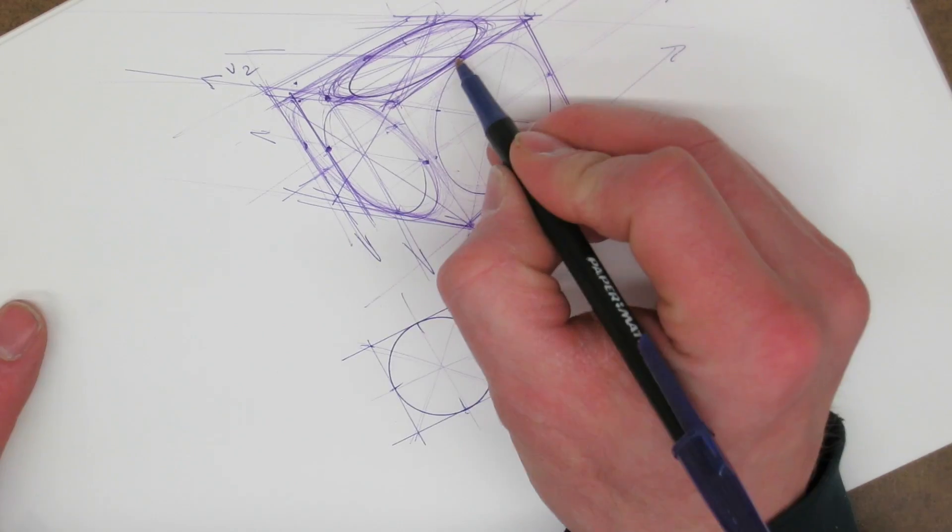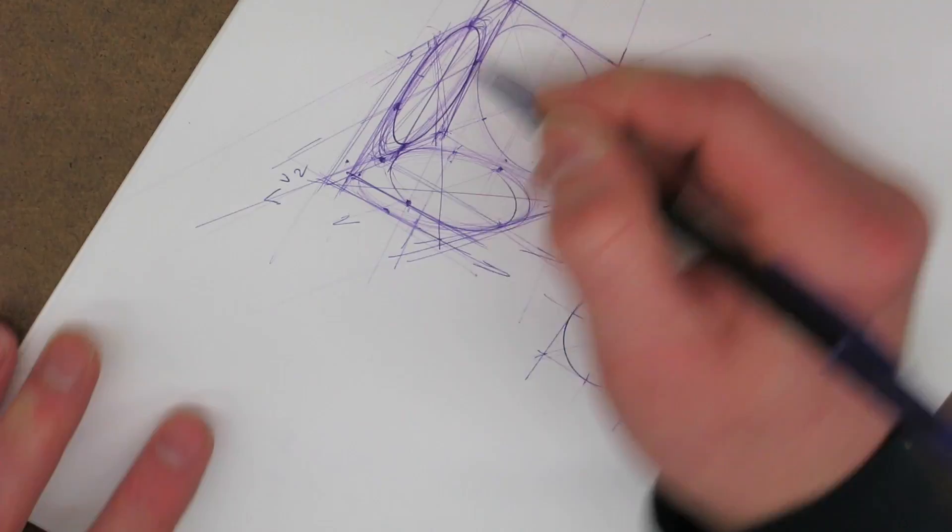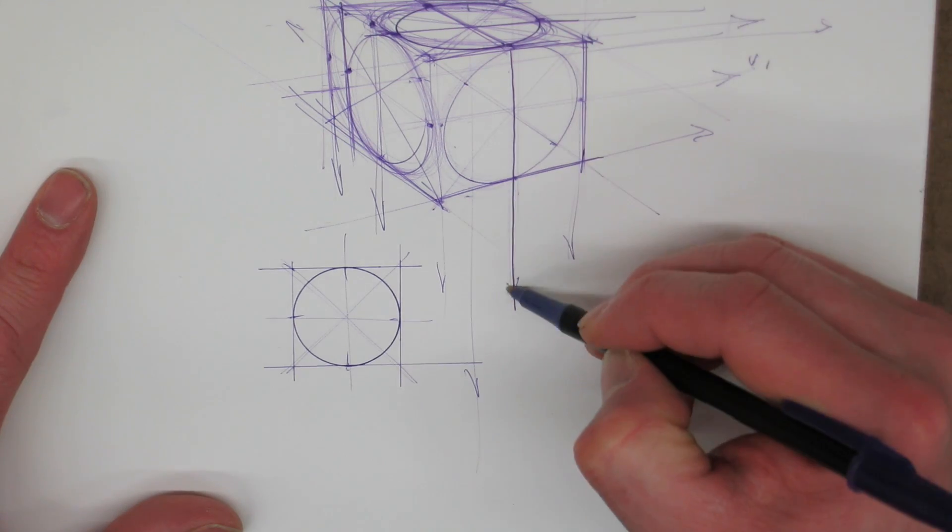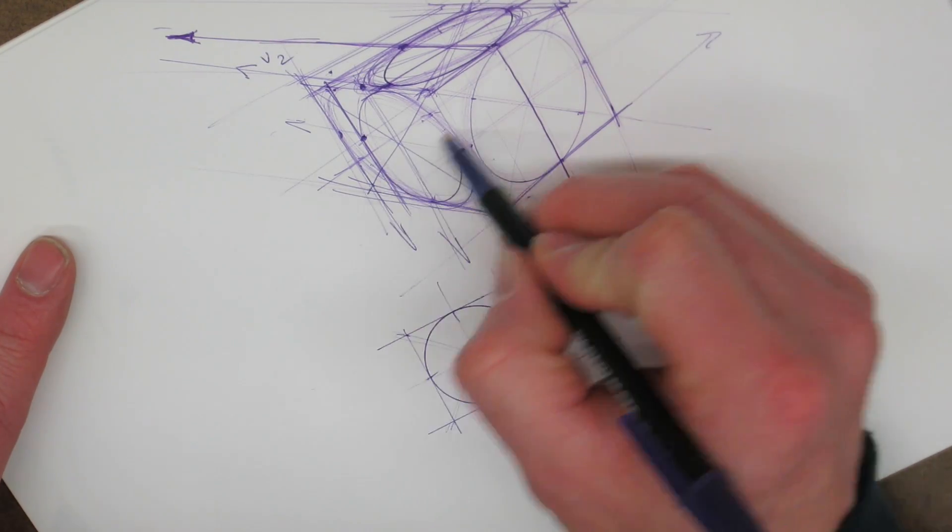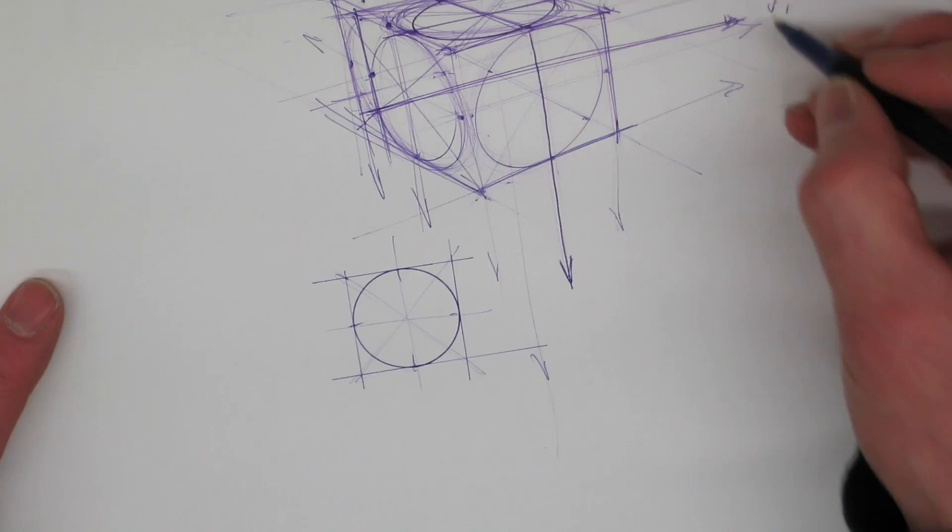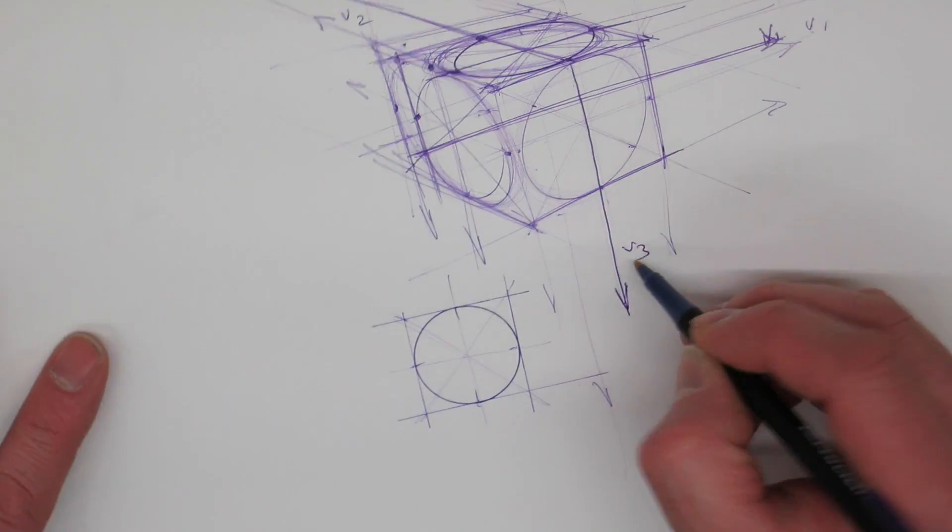I'm just drawing in some lines here and I actually draw them incorrect for two of the ellipses. The one I just drew is correct, the one at the top and the one at the bottom I draw those incorrectly through the circles